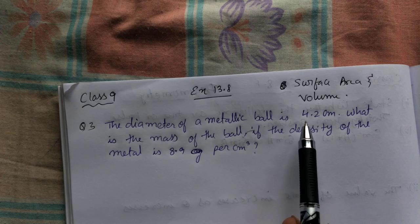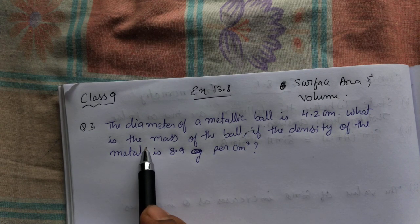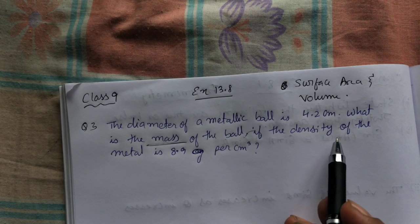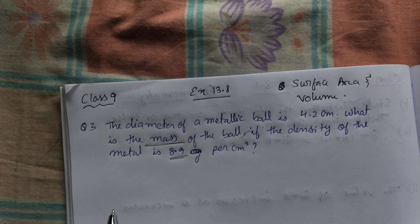The diameter of the metallic ball is 4.2 centimeters. What is the mass of the ball if the density is given as this much?